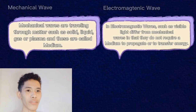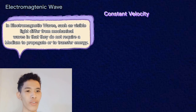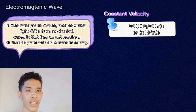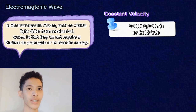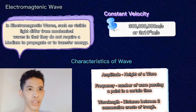To summarize: there are two important types of waves — mechanical waves and electromagnetic waves. The constant velocity of an electromagnetic wave is 300 million meters per second, or 3 times 10 to the 8 meters per second. Waves are characterized by amplitude, frequency, and wavelength.